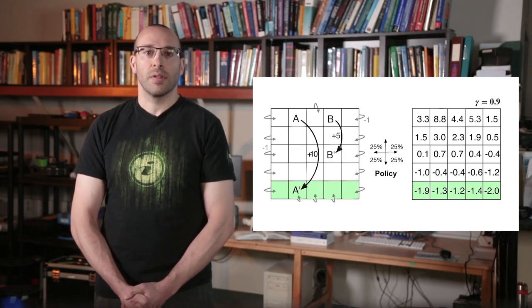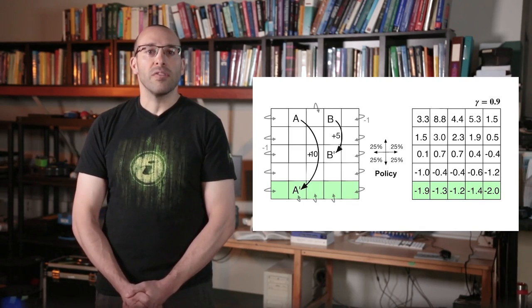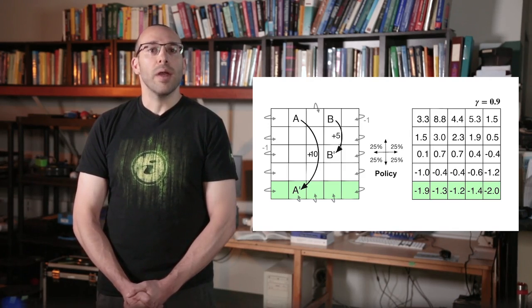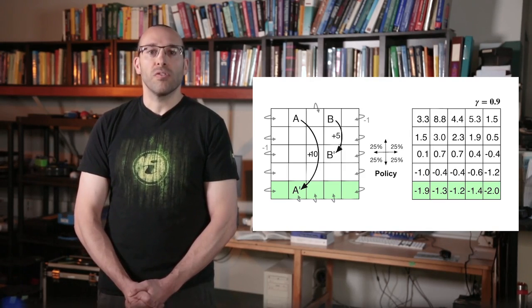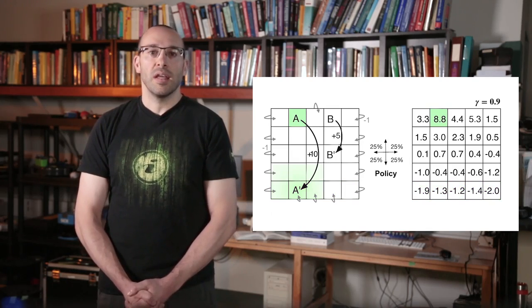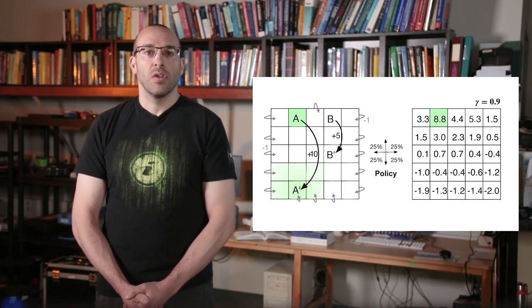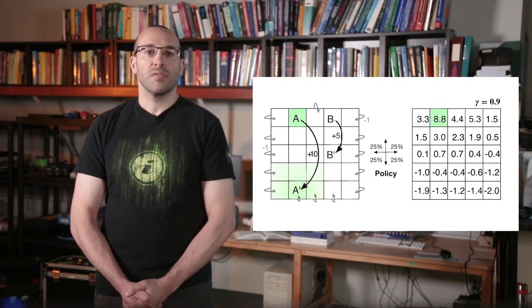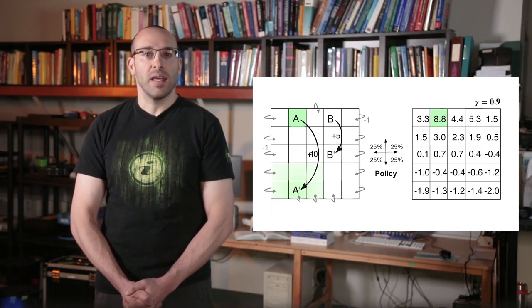First, notice the negative values near the bottom. These values are low because the agent is likely to bump into the wall before reaching the distant states A and B. Remember, A and B are both the only sources of positive reward in this MDP. State A has the highest value. Notice that the value is less than ten.